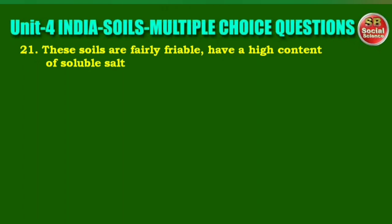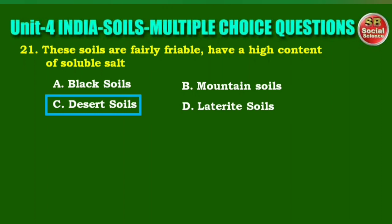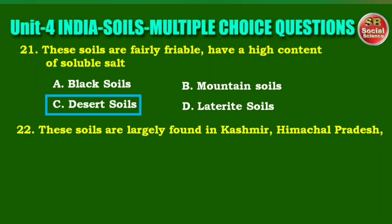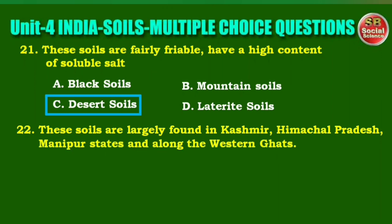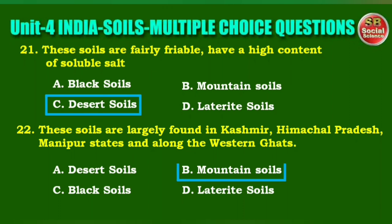Next question: these soils are fairly friable and have a high content of soluble salt. Options are: black soils, mountain soils, desert soils, laterite soils. The right answer is option C, desert soils. Next question: these soils are largely found in Kashmir, Himachal Pradesh, Manipur states, and along the Western Ghats. Options are: desert soils, mountain soils, black soils, laterite soils. The right answer is option B, mountain soils.